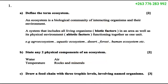We want to look at Paper 2 Combined Science November 2020. Question number one asked: define the term ecosystem. An ecosystem is a biological community — that's the first thing to understand. It's a biological community of interacting organisms in their environment, where both the organisms and the environment are interacting.